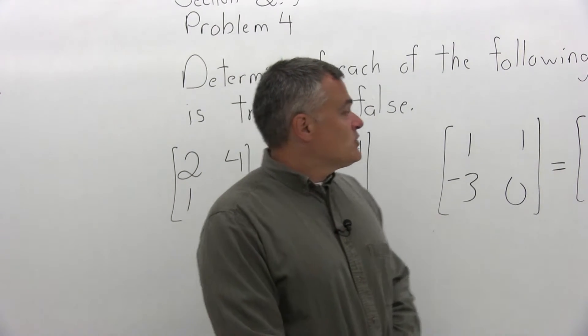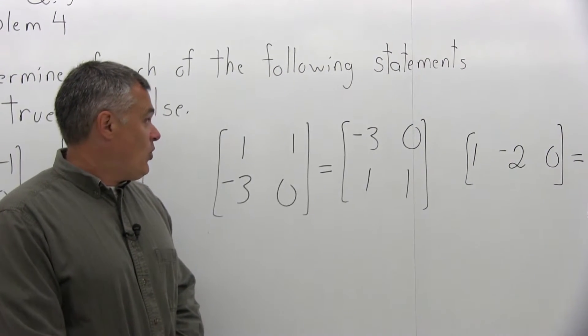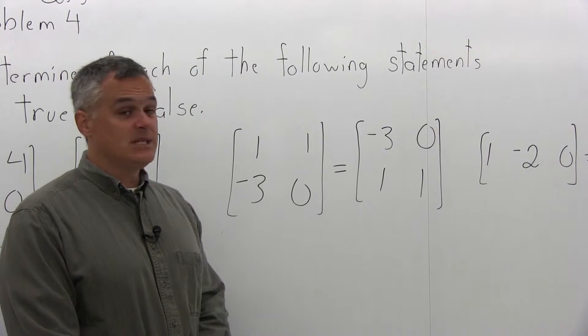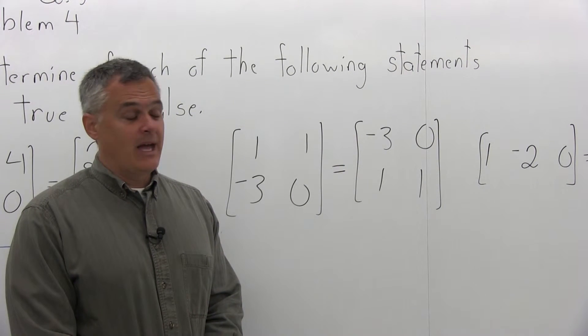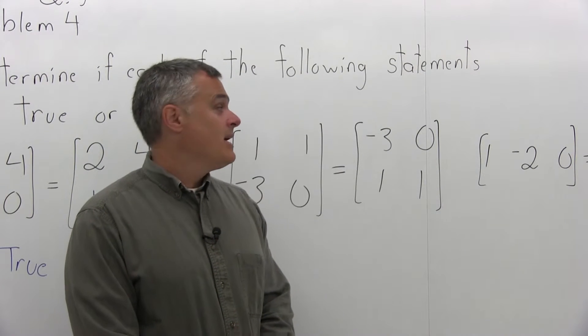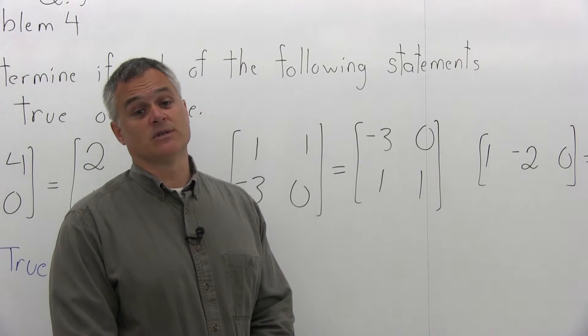Now the next one: you have very similar matrices and it claims that they're equal. [1, 1] across the top of the first matrix and [-3, 0] on the bottom. Is that equal to [-3, 0] across the top and [1, 1] on the bottom? They've just switched the rows of the second matrix.